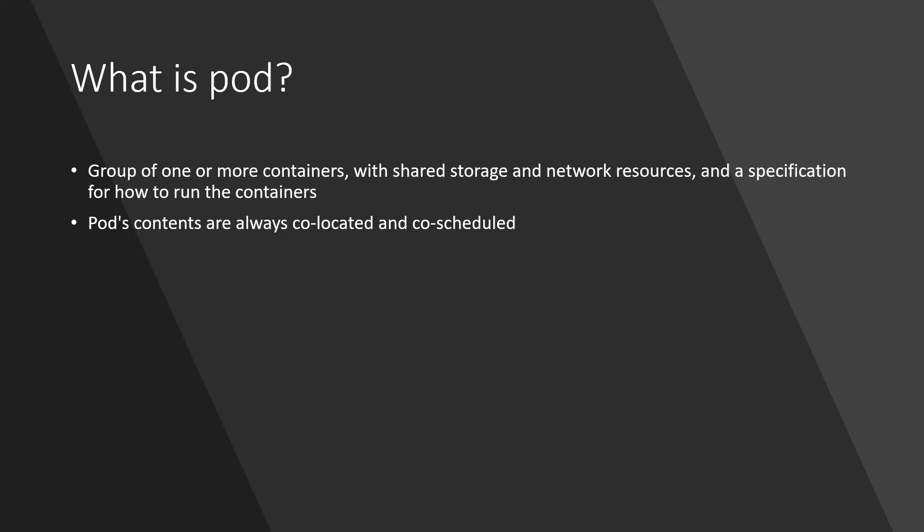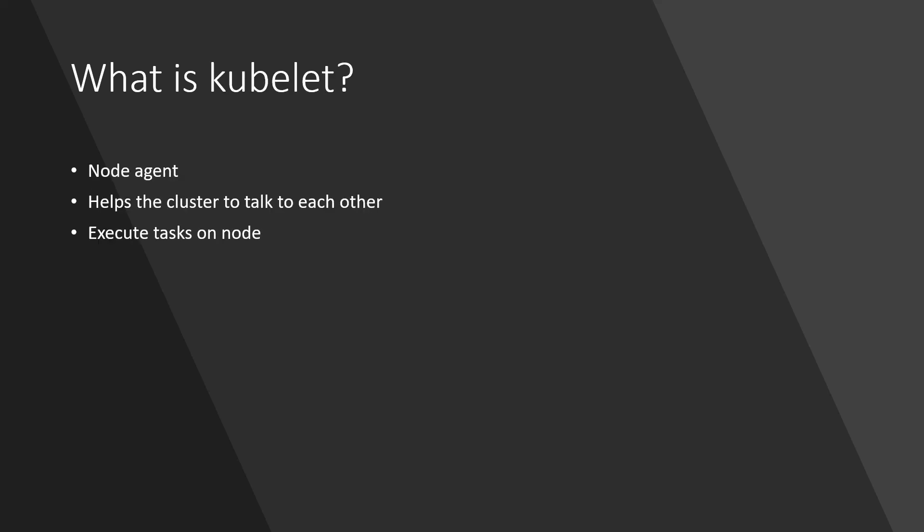What is a pod? A pod is a group of one or more containers that have shared storage and network resources, plus a specification on how to run the containers. Inside a pod, multiple containers will have their own shared storage and network resources, and there will be a specification for how to run those containers. The contents of a pod are co-located and co-scheduled. What is Kubelet? Every node has a process called Kubelet, which is a node agent. Every single node will have Kubelet, and it helps the cluster nodes communicate with each other and execute tasks on a node.